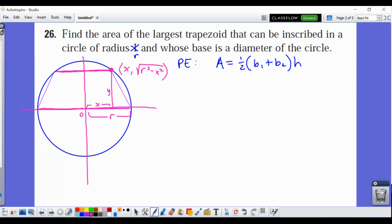And then if you call this y, here's a right triangle that you can use to get this value for y. Because again, this is r, that's a radius of the circle right there.